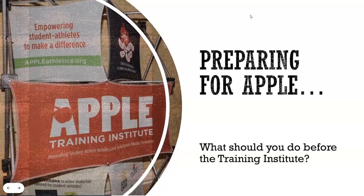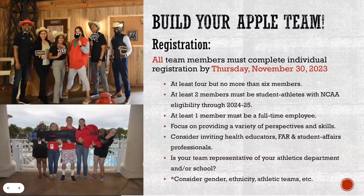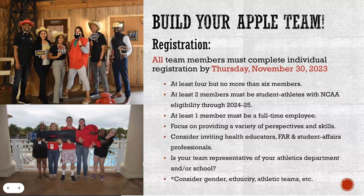How do you get ready for Apple? That's why we have this webinar pretty far in advance — it's October now and the Training Institute isn't until February. Your first and most important task right now is building your Apple team. You've all got the links for individual registration, and you need to register yourself as well. You have until November 30th to pull your team together. You have to have at least four people but no more than six. Two of your members must be student athletes and they have to have eligibility through the next academic year — if they're graduating in May, they're not going to be around to implement the plan.